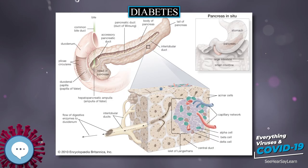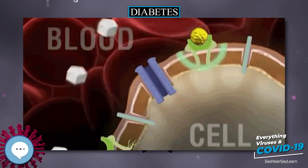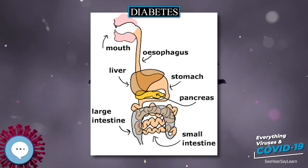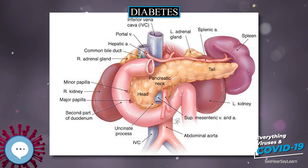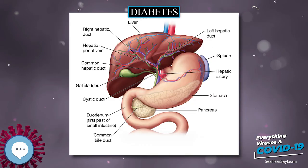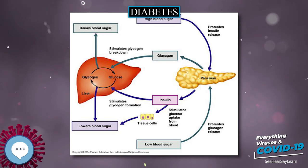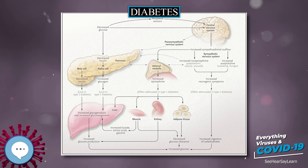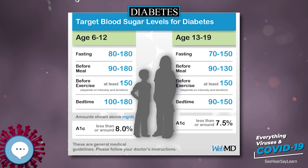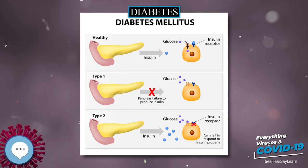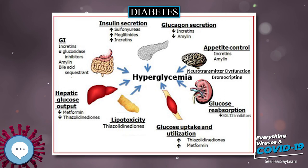The 1989 Saint Vincent Declaration was the result of international efforts to improve the care accorded to those with diabetes. This is important not only in terms of quality of life and life expectancy but also economically, as expenses due to diabetes have been shown to be a major drain on health and productivity-related resources for healthcare systems and governments. Several countries established national diabetes programs to improve treatment of the disease. People with diabetes who have neuropathic symptoms such as numbness or tingling in feet or hands are twice as likely to be unemployed as those without the symptoms. In 2010, diabetes-related emergency room visit rates in the United States were higher among people from the lowest-income communities.